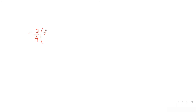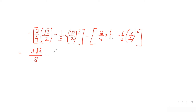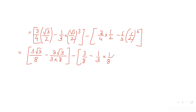Plugging in the upper limit x = √3/2: we get 3/4 · (√3/2) - (1/3) · (√3/2)³. Then subtracting the lower limit x = 1/2: 3/4 · (1/2) - (1/3) · (1/2)³. This gives 3√3/8 - 3√3/24 - 3/8 + 1/24.